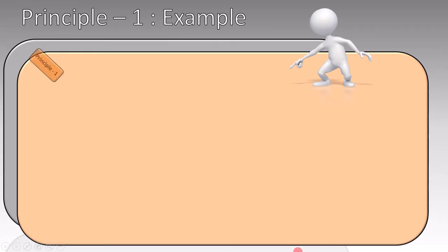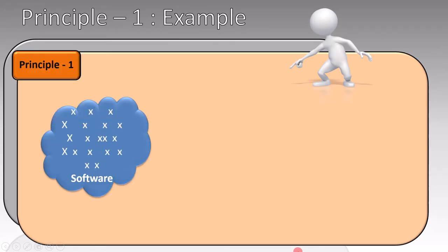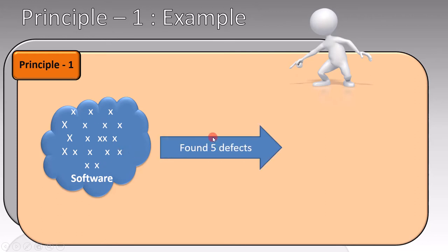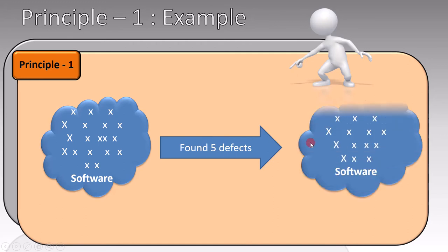Let's try to understand these points with an example. Suppose you have 20 defects in the software. When you perform testing, you find 5 defects out of it. It has 20 defects, and you found 5. So the remaining defects are 15, which could not be found.